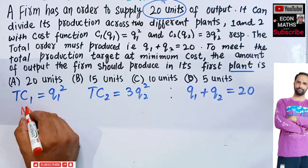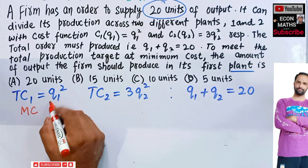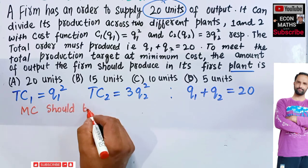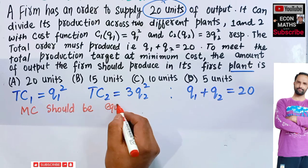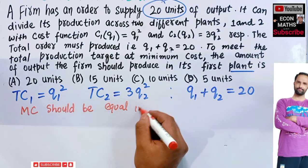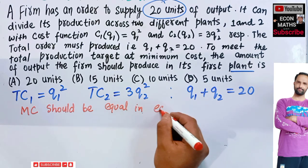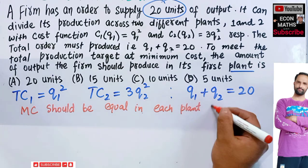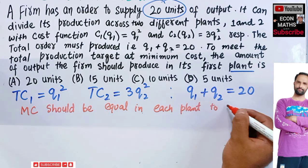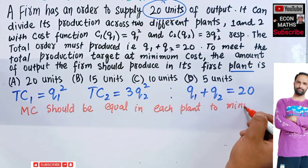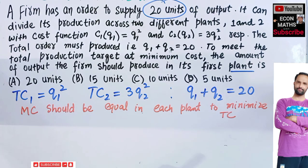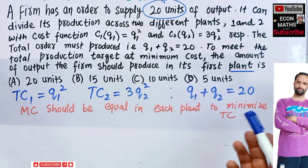To minimize the cost, the condition is that the marginal cost should be equal in each plant. So to minimize total cost, we just need to equate the marginal cost in the two different plants with each other.